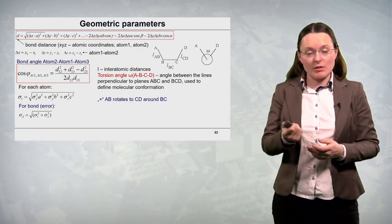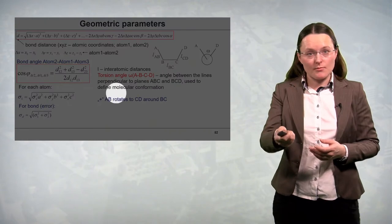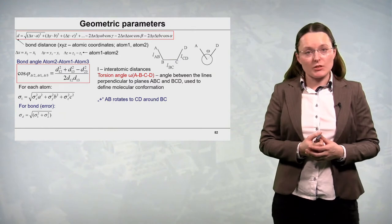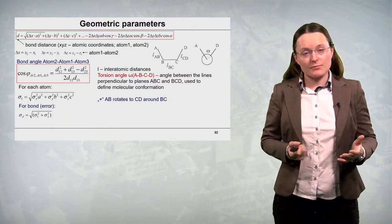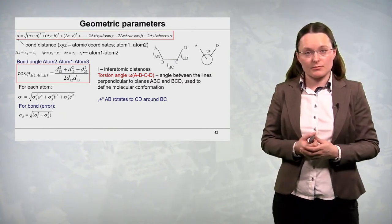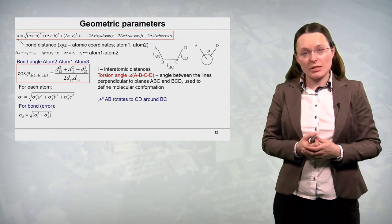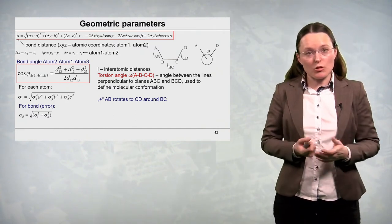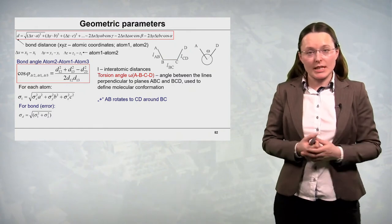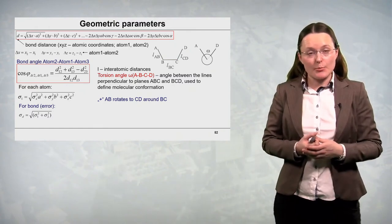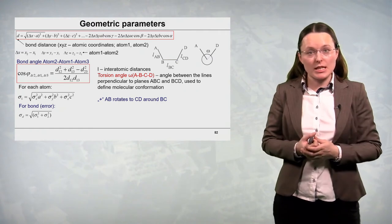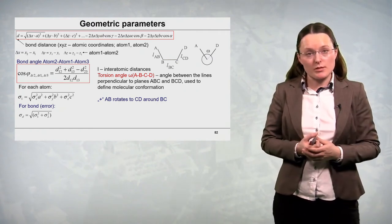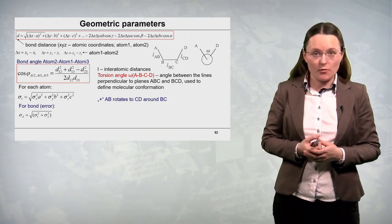And there is one additional important parameter, the torsion angle which can be defined for tetratomic fragments. In this case A, B, C, D. So we consider a torsion angle omega as an angle between the lines perpendicular to the planes A, B, C and B, C, D. And this angle is typically used to define molecular conformation.